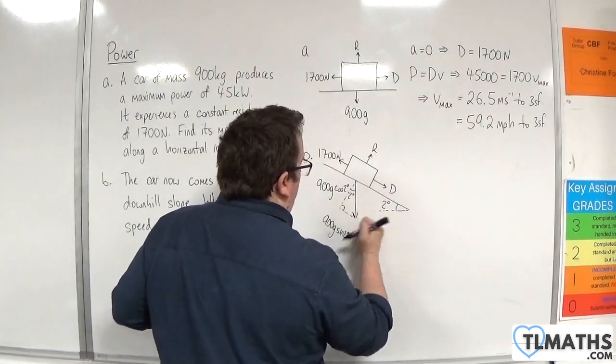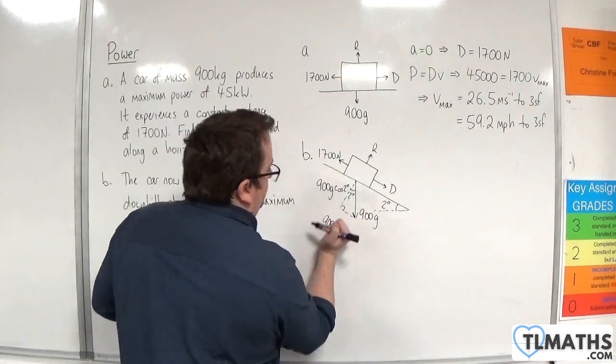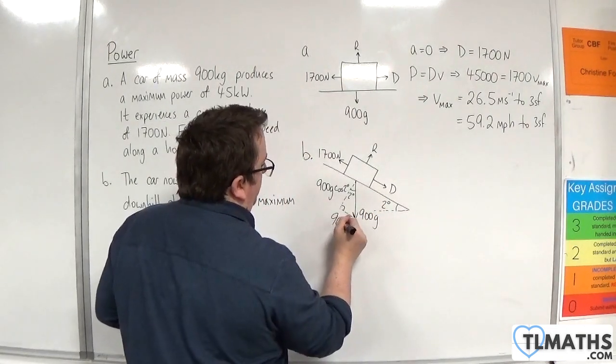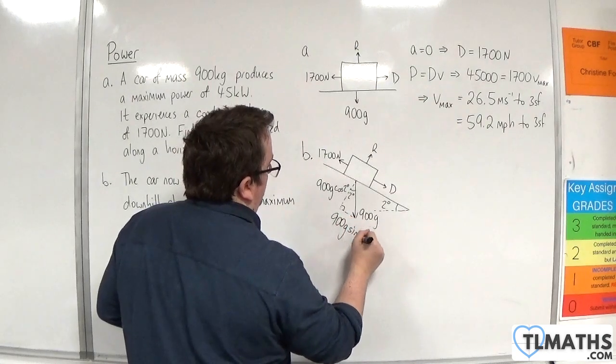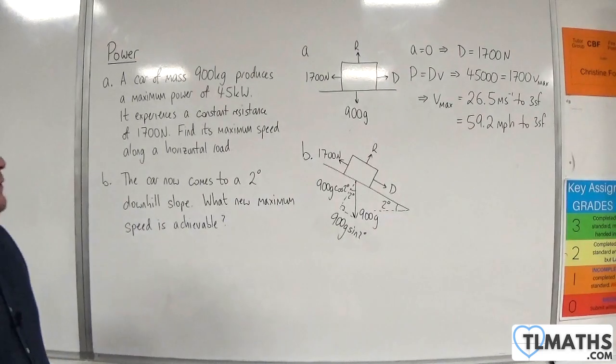So I'll just write the 900 G here, so it's not getting confused with that. Okay, that'll do.